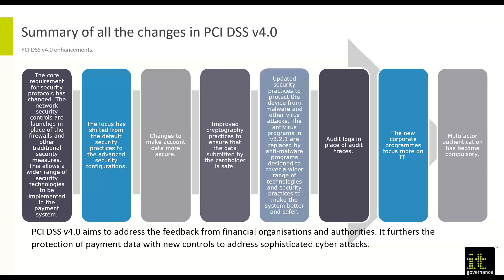Summary of changes: the core security control protocols have changed. Network security controls have launched in place of firewalls and other traditional security measures. Firewalls are more static and can be beaten — implicit deny rules can be spoofed, and nefarious actors are accessing them through existing ports and protocols. This allows for wireless security technology to be implemented as a defense in depth, not just relying on firewalls. The focus has shifted from default security practices to more advanced, dynamic security configurations.